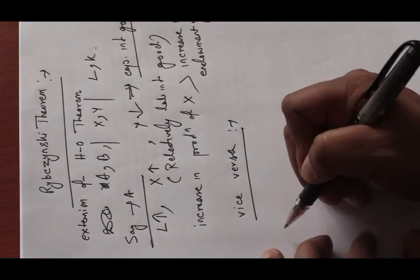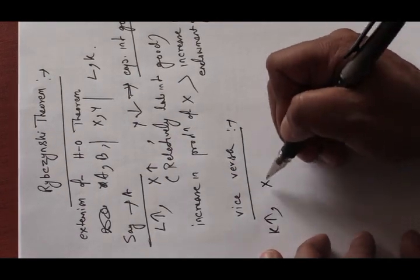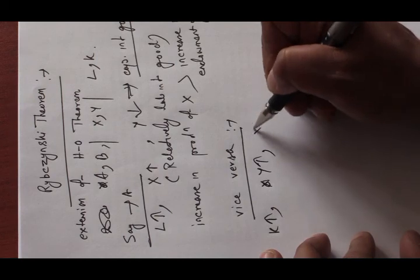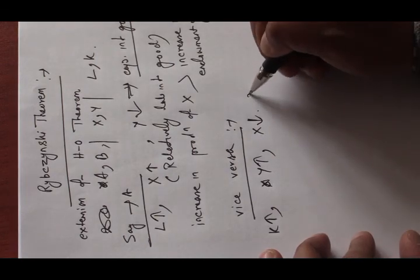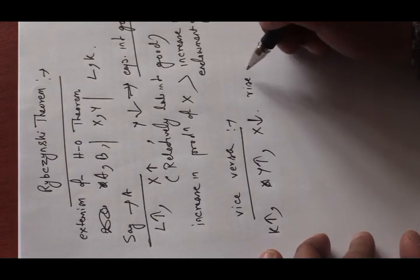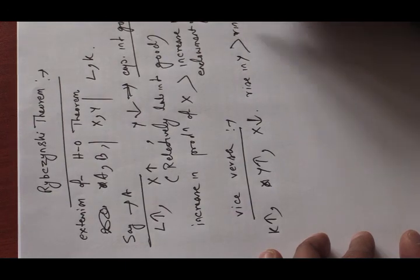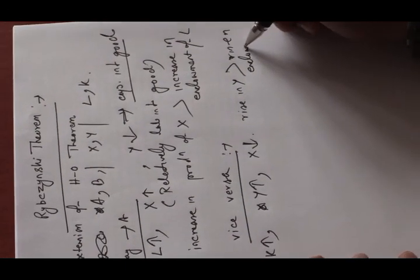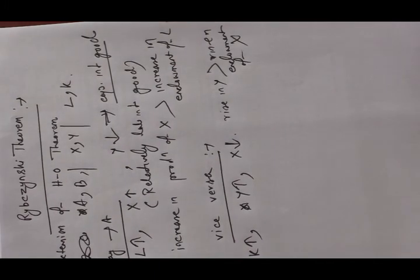Conversely, if capital stock increases, then Y will rise, X will fall, and the rise in Y will be greater than the rise in endowment of K.